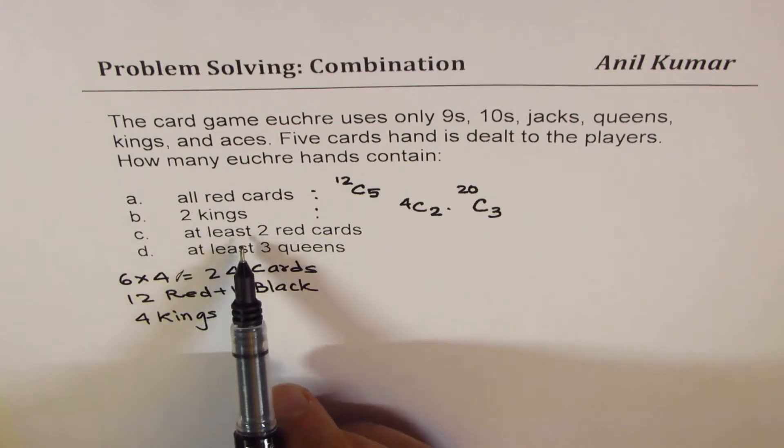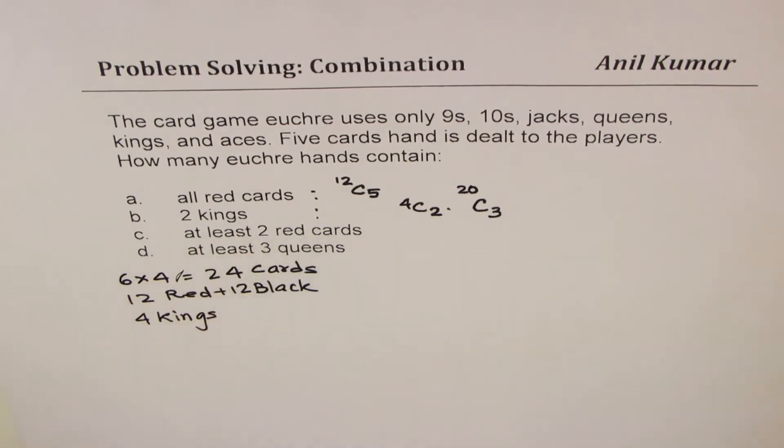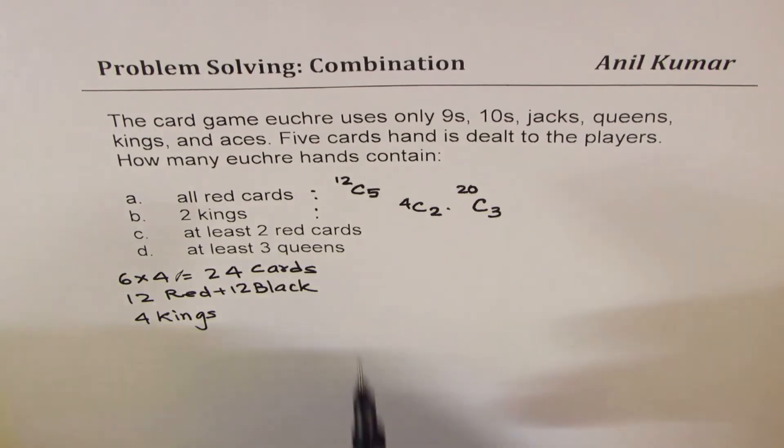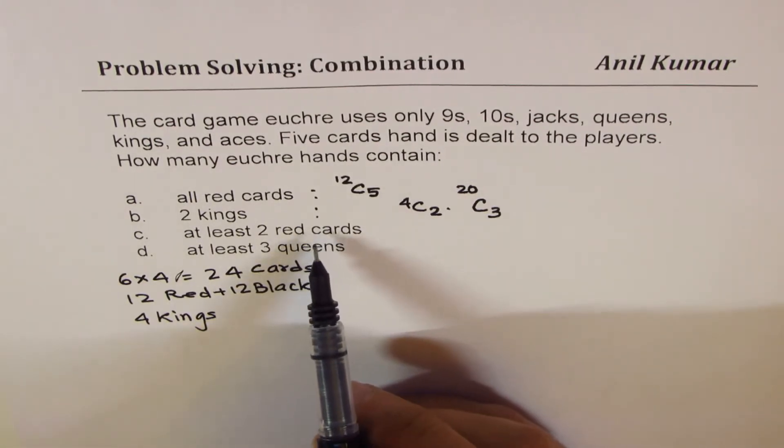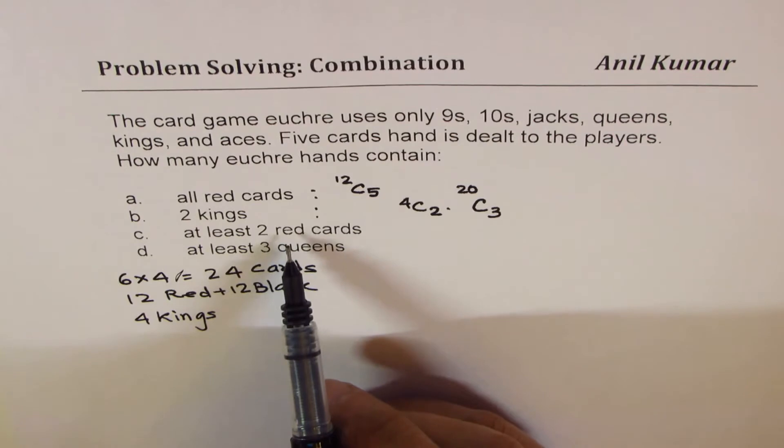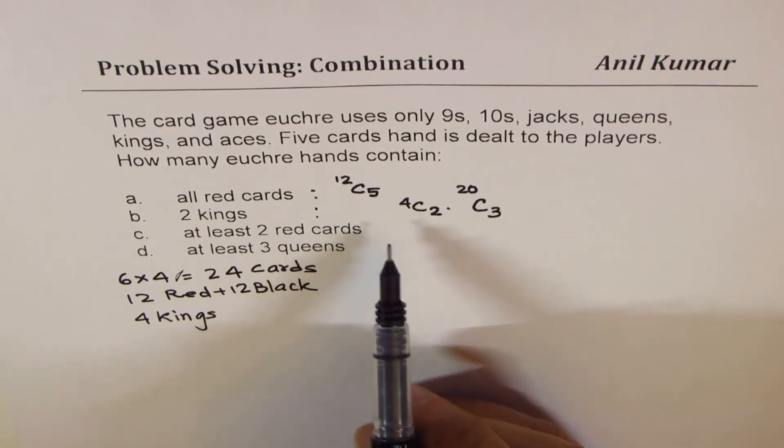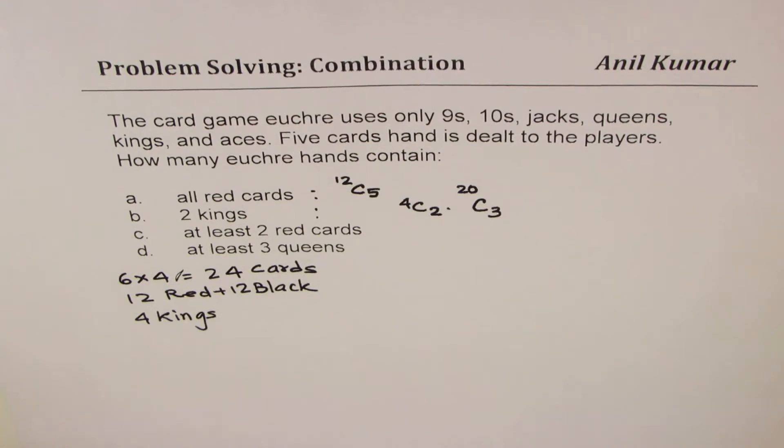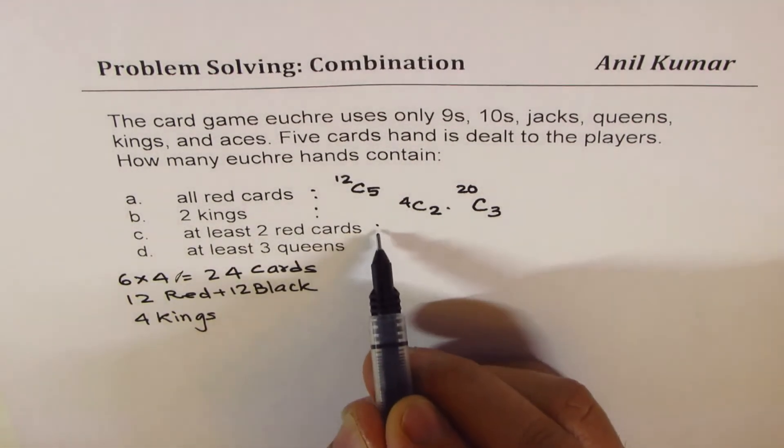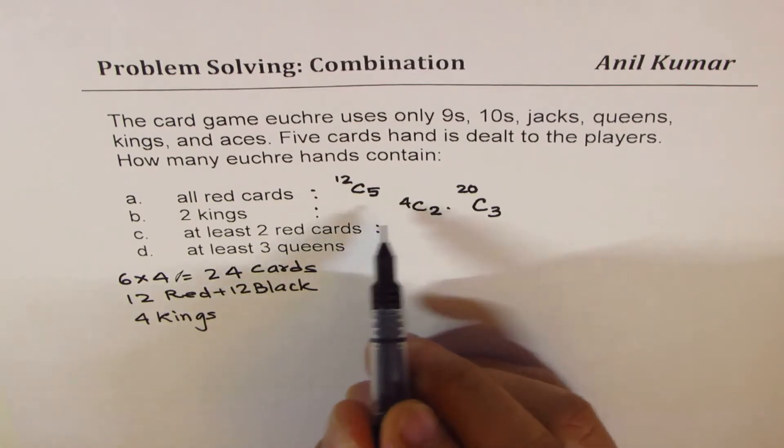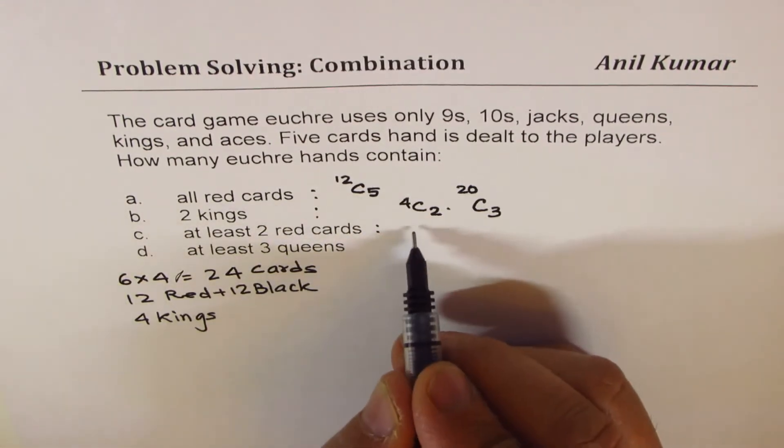C is at least two red cards. So that really means that we can get two red cards, three red cards, four red cards, or five red cards. So that could be one way. The other way to do this is find total cards. So let's find the total.